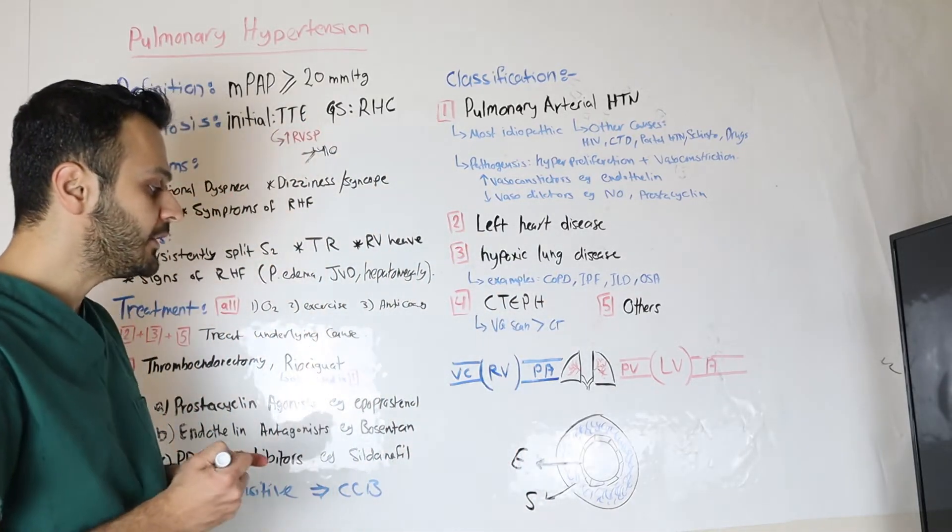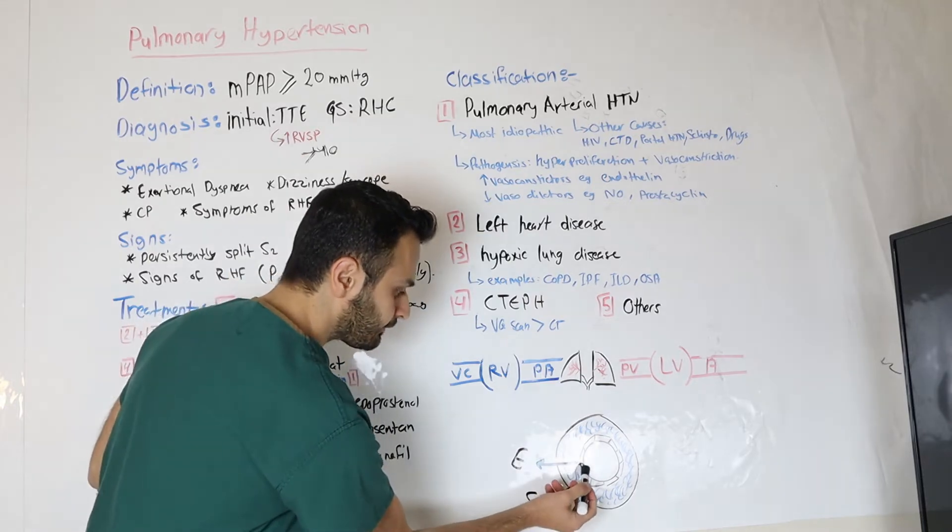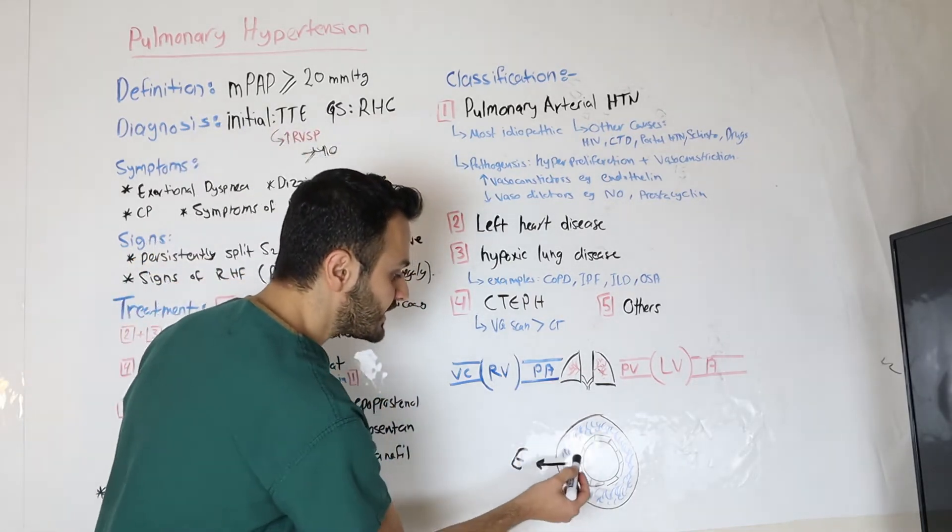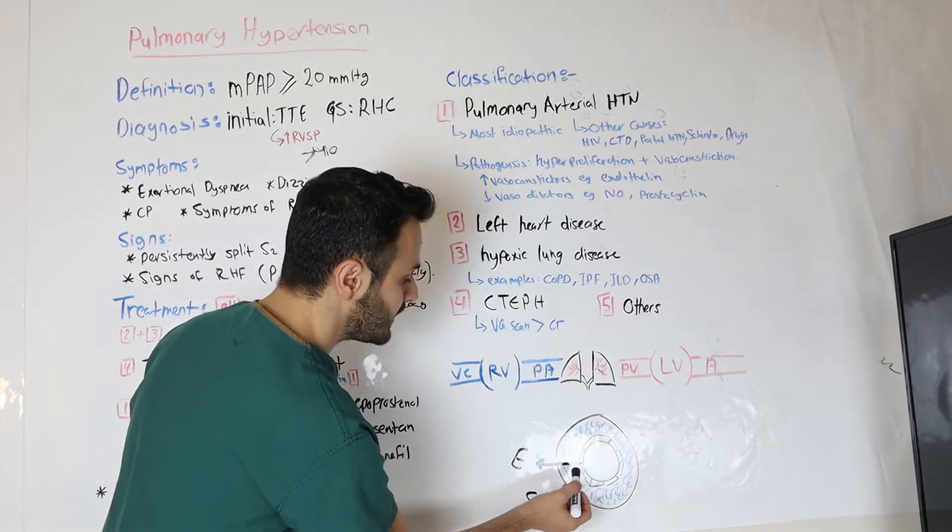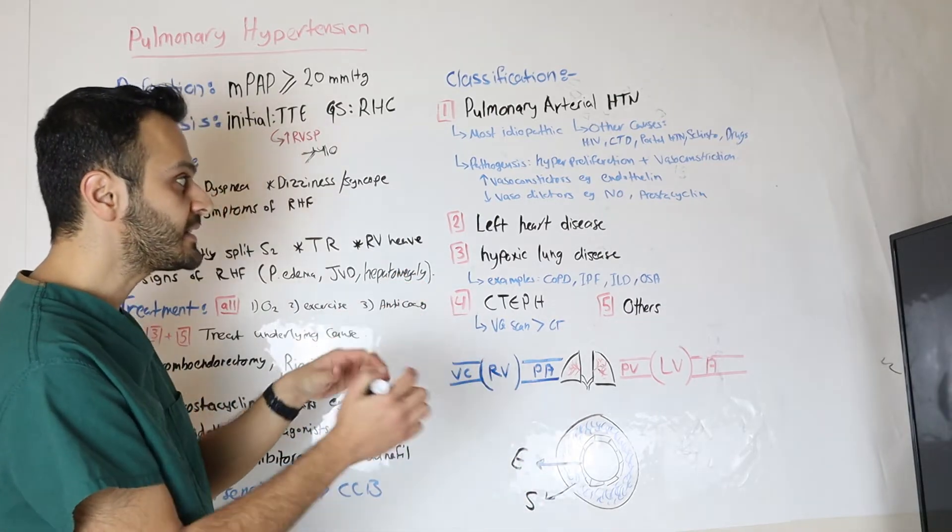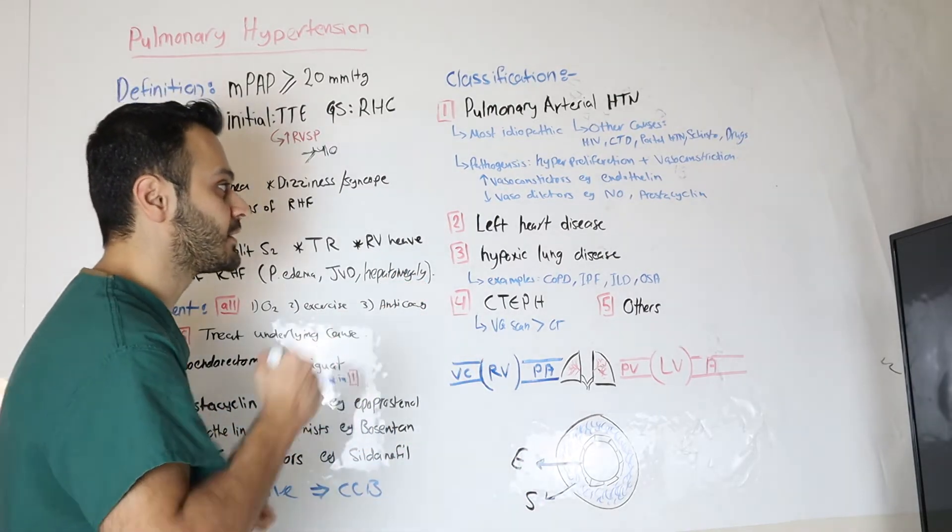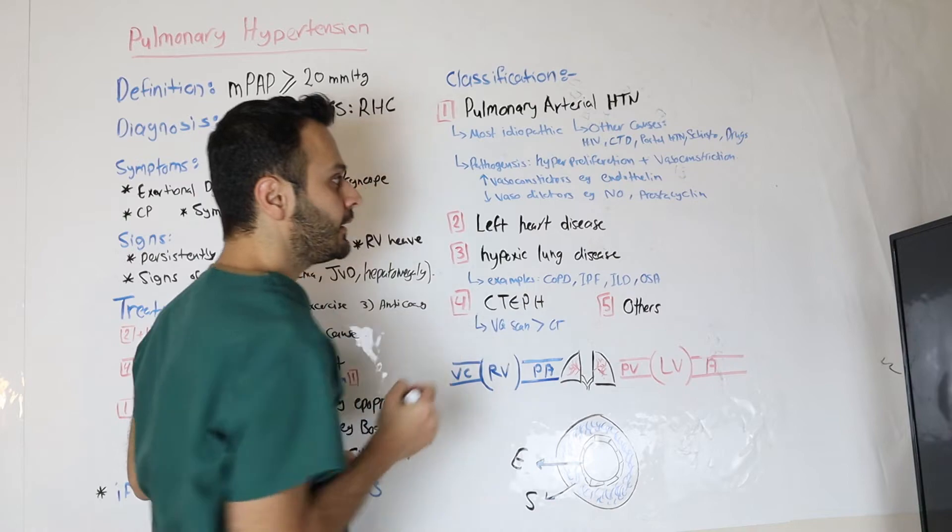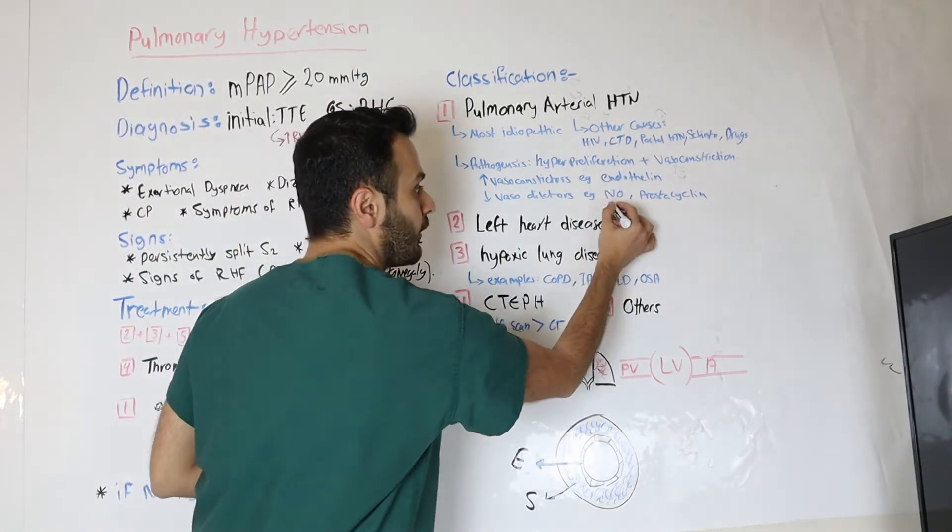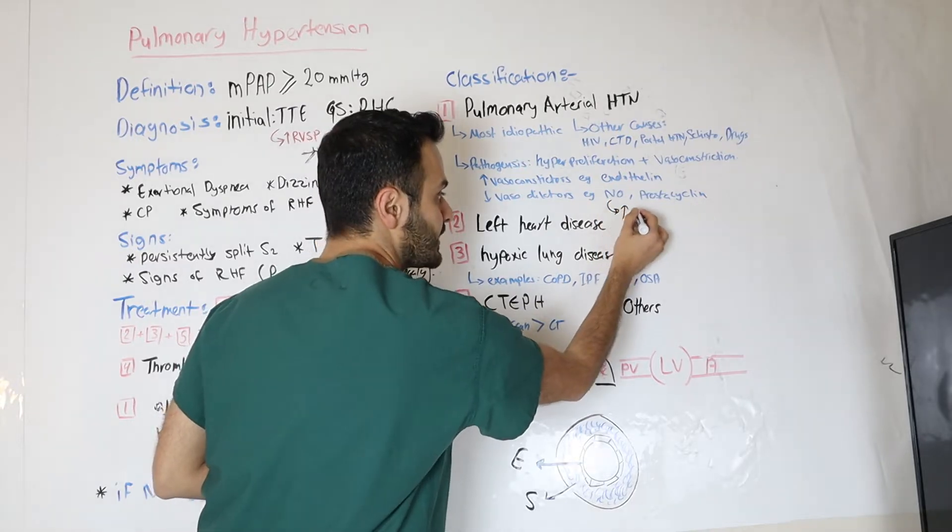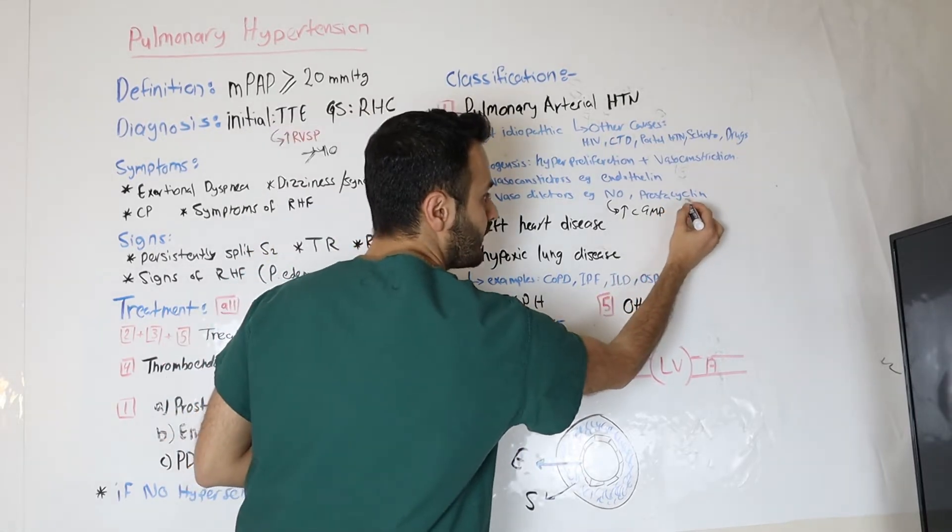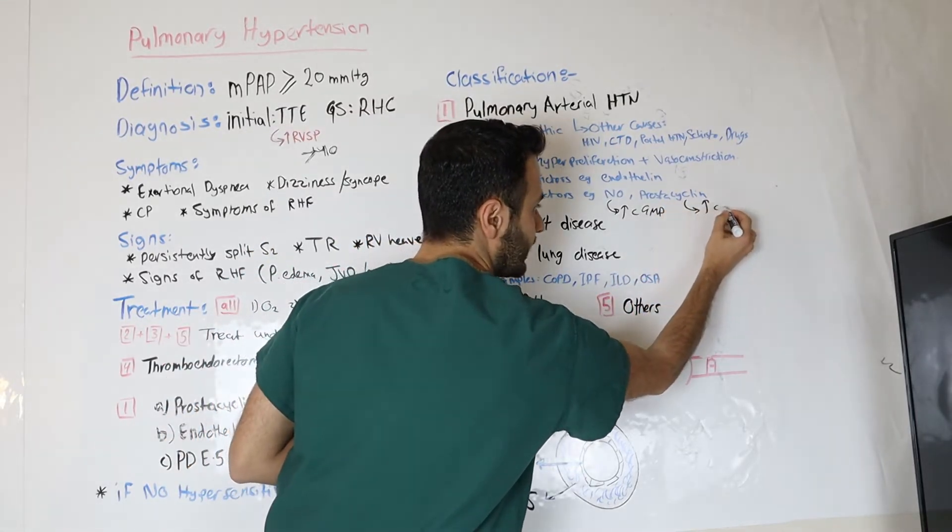And in normal patients, the endothelial layer, depending on the state of the body, will secrete certain chemicals to the smooth muscle to allow it to vasoconstrict or dilate. These chemicals, some of them are vasoconstrictors, such as endothelin. Some of them are vasodilators, such as nitric oxide, that will then lead to an increased level of cyclic GMP, or prostacyclin, that will lead to an increased level of cyclic AMP, and both of those are vasodilators.